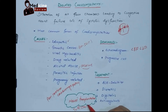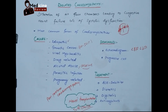The treatment of choice is heart transplantation. However, theoretically, the heart cannot be transplanted alone — it should be transplanted along with the lungs, which is called cardiopulmonary transplantation. Heart transplantation is the definitive treatment of choice in dilated cardiomyopathy.